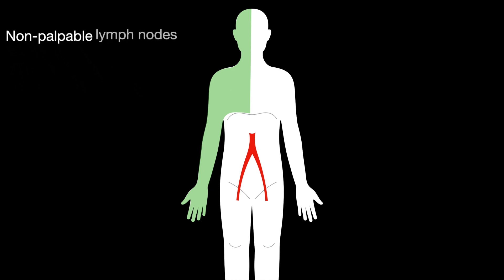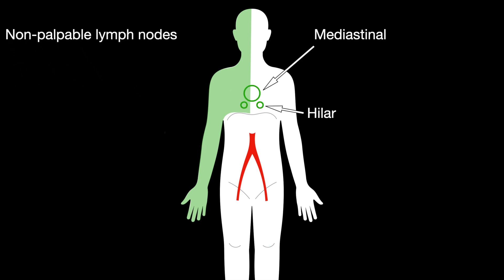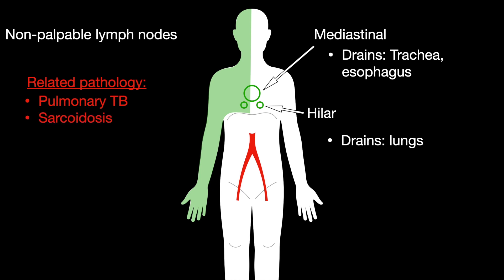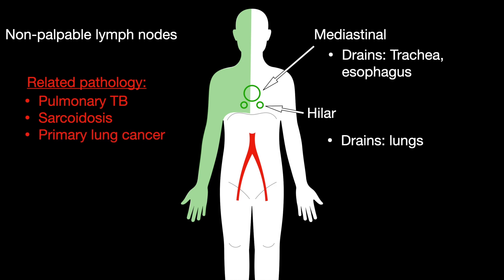The non-palpable lymph nodes. The mediastinal and hilar lymph nodes: the mediastinal drains the trachea and the esophagus, while the hilar drains the lungs. Related pathology includes pulmonary tuberculosis, sarcoidosis, which causes granulomas — collections of inflammatory cells — primary lung cancer, and chronic granulomatous disease (CGD), which results in catalase-positive bacterial infections.